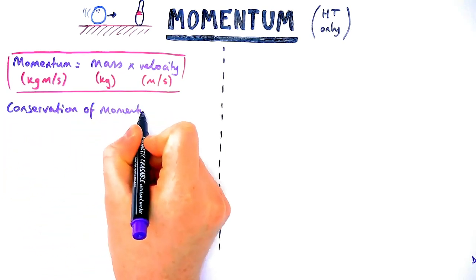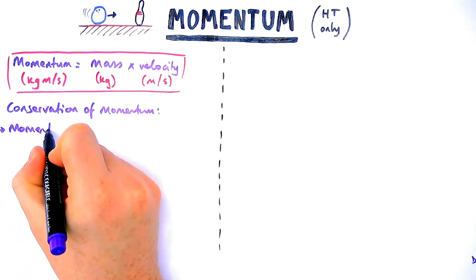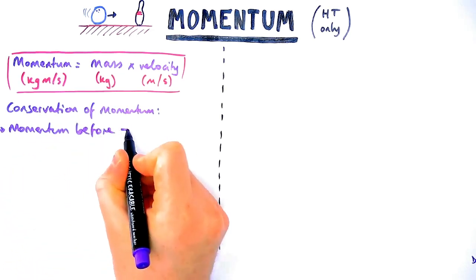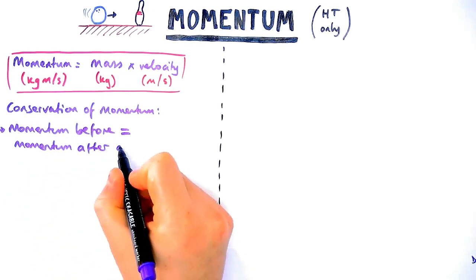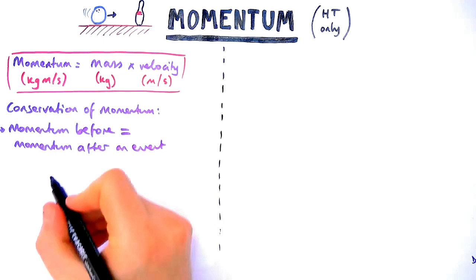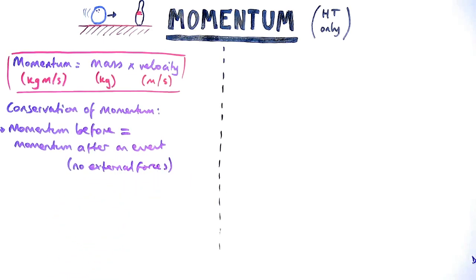Momentum is always conserved just like energy, so the momentum before an event or collision is equal to the momentum after an event or collision. This only applies in a closed system meaning there are no external forces acting like friction or air resistance.